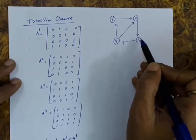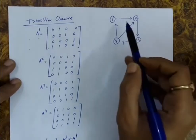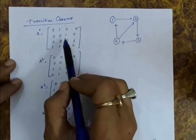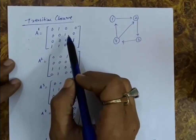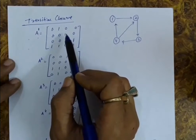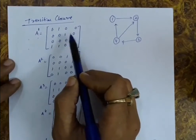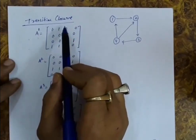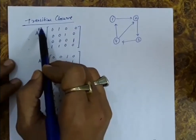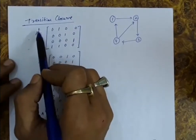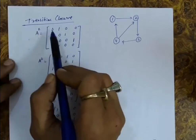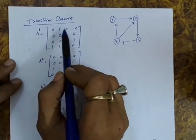For finding out the transitive closure, suppose this is the original graph given. We have computed the A matrix, which is the adjacency matrix. Just for convenience, I have taken it as A superscript 1. Let us say A1 is representing all the paths of length 1.